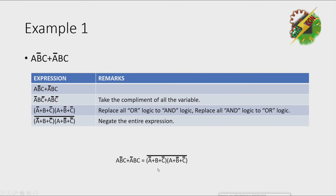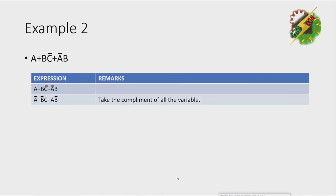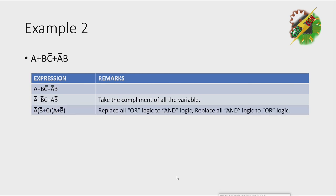Let's go to example 2. A + BC̄ + ĀB. The first step, let's take the complement. Second step, interchange OR and AND logic. And the last step, negate the entire expression and this will be the final answer.